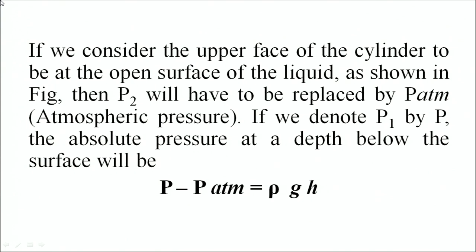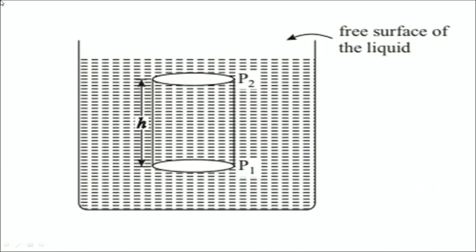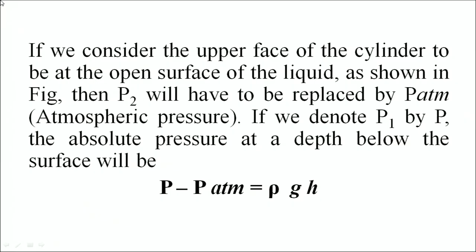If we consider the upper face of the cylinder to be at the open surface of the liquid, therefore, we can say the P1, the upper surface pressure is replaced by the pressure of the atmosphere. And again, by considering the same difference, you will get the same answer, which again depends on the height of the object.